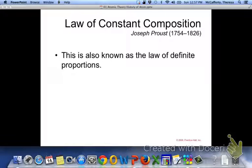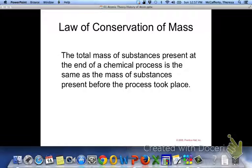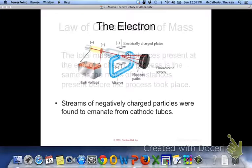It's always going to be a whole number ratio. Law of constant composition, also known as law of definite proportions, is just different ways of saying it. And then the law of conservation of mass: total mass of substances present at the end of a chemical process is the same as the mass of substances present before the process took place.